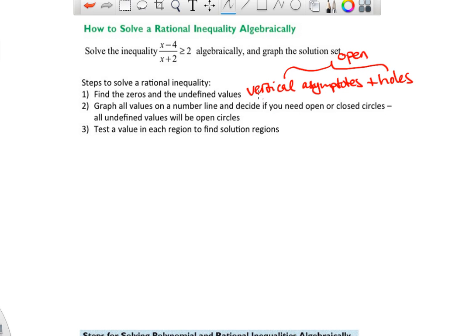Zeros, it depends. If it's a greater than or equal to, or if it's a less than or equal to, then you'll have closed circles. Zeros, but you can have both there.